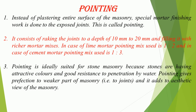Pointing. Instead of plastering the entire surface of the masonry, special mortar finishing work is done to the exposed joints — this is called pointing. It consists of raking the joints to a depth of 10 mm to 20 mm and filling it with richer mortar mixes. In case of lime mortar, the pointing mix used is 1:3. Pointing is ideally suited for stone masonry because stones have attractive colors and good resistance to penetration by water. Pointing gives protection to the weaker part of masonry, i.e., the joints, and adds to the aesthetic view of the masonry.